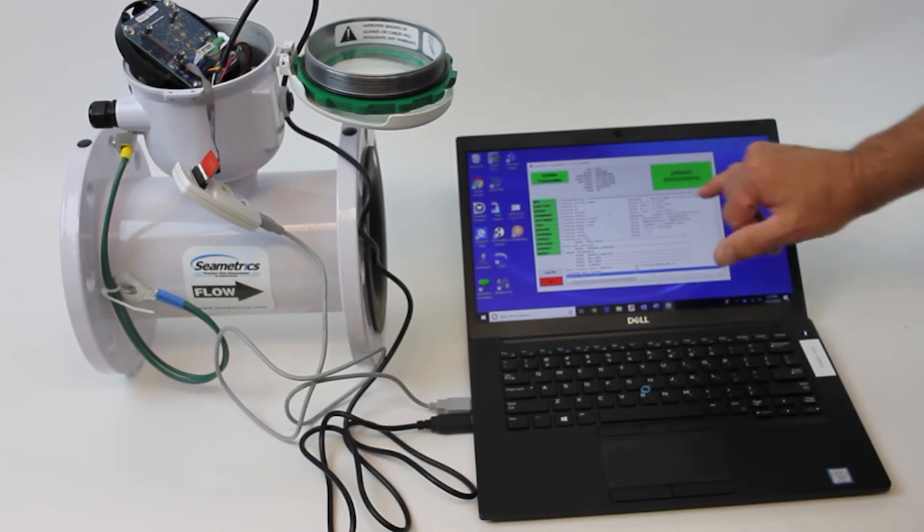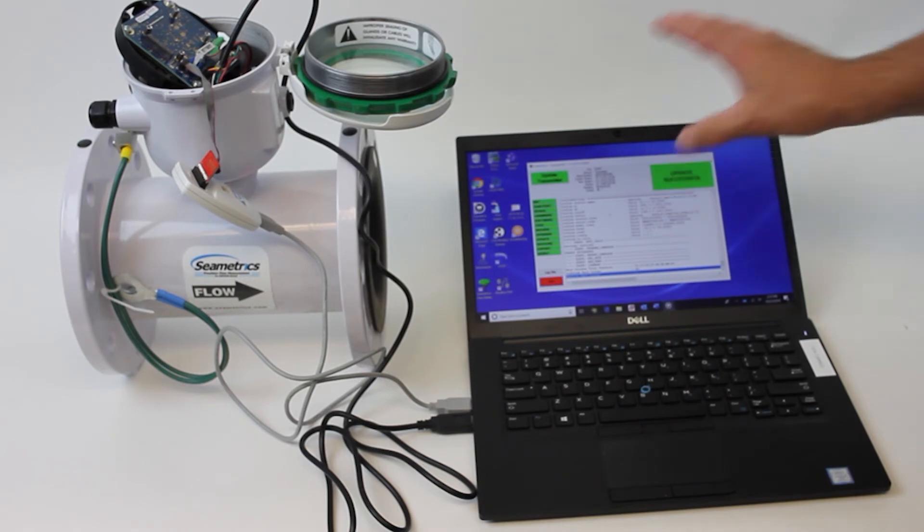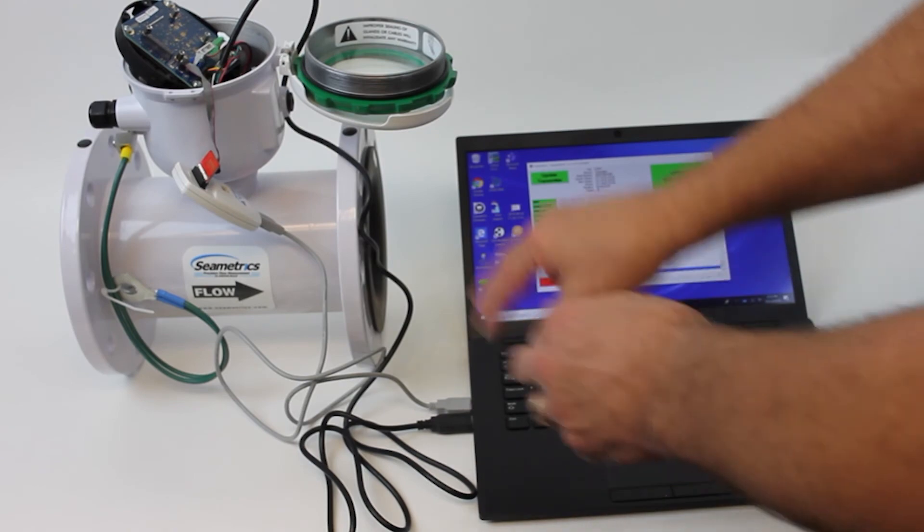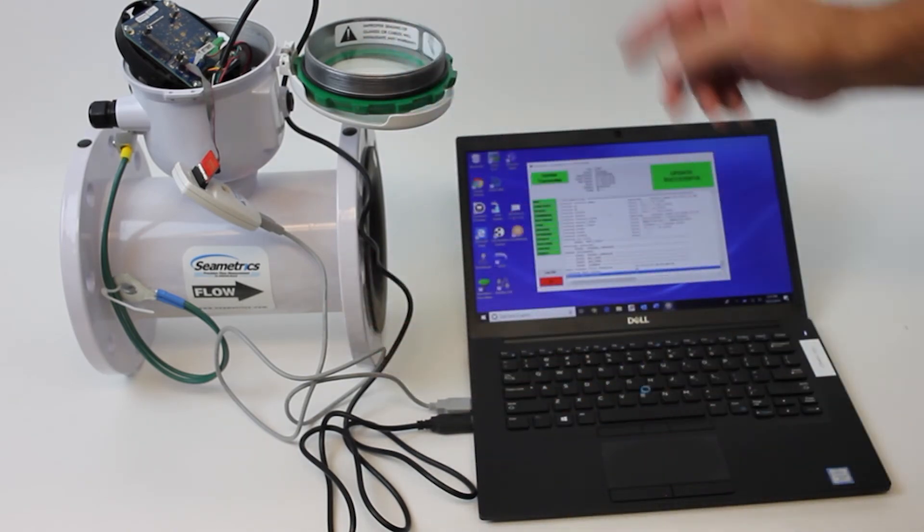It will clearly tell you that the update was not successful right up in here if it didn't. Now if it doesn't tell you that the update was successful, just simply do it again. Check your cables, make sure everything's hooked up and do it again.